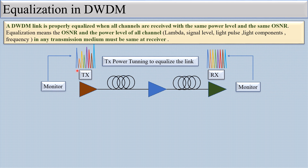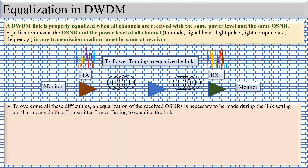You can see here: this is the TX, this is the RX, and these are monitors — one at the transmission end and one at the receiver. TX power is monitored at the transmission end and received power is monitored at the receiver. TX power tuning to equalize the link is one of the solutions for equalization in DWDM. To overcome these difficulties, equalization of the received OSNR is necessary and must be done during the link setup — before configuring the link, we tune the transmitted power of different wavelengths so that the receive power and OSNR of all channels are the same.